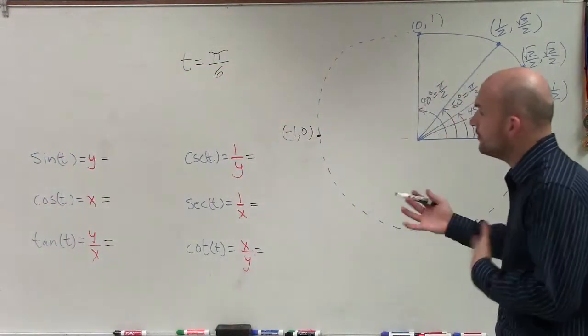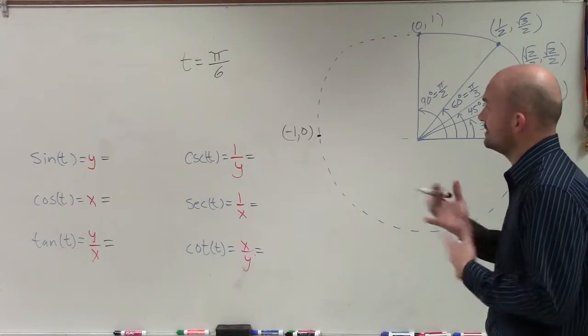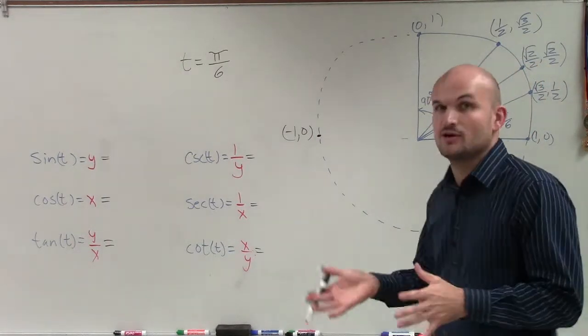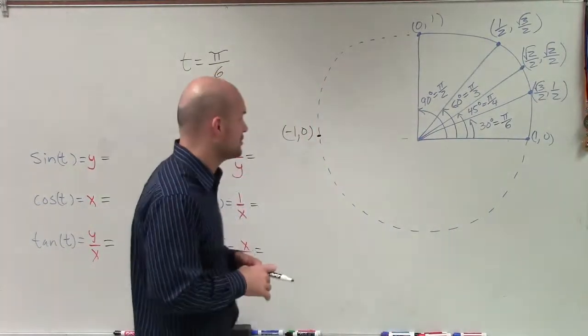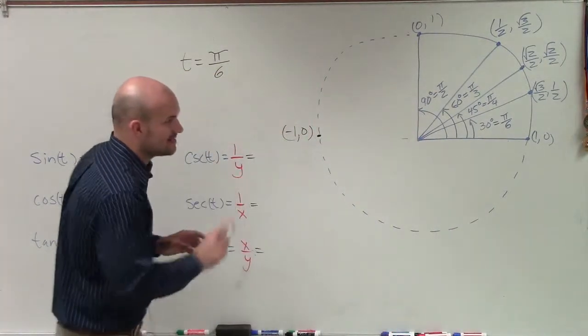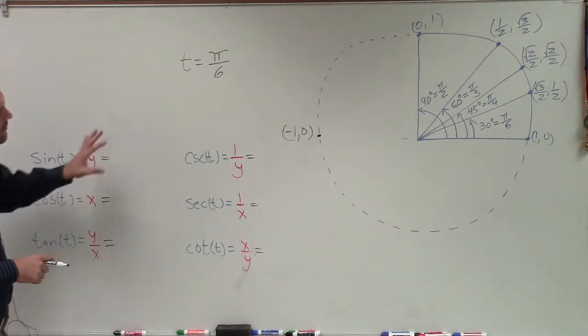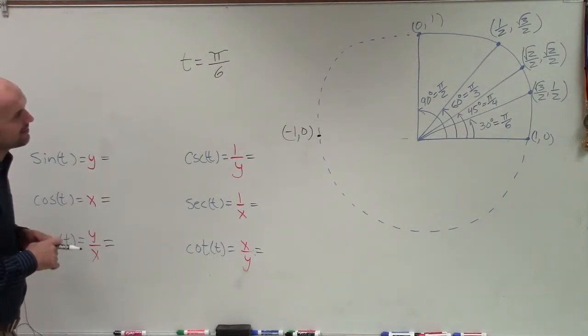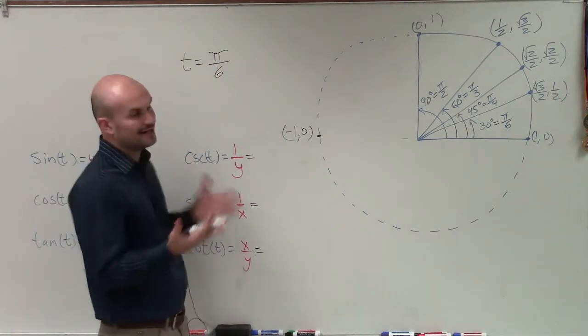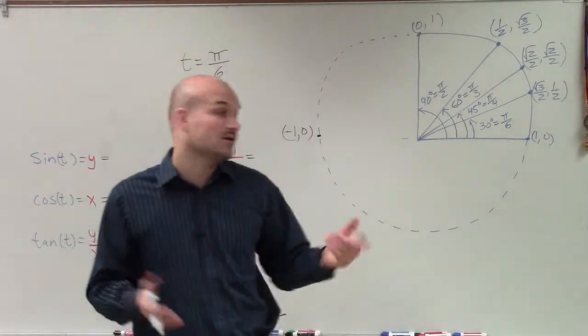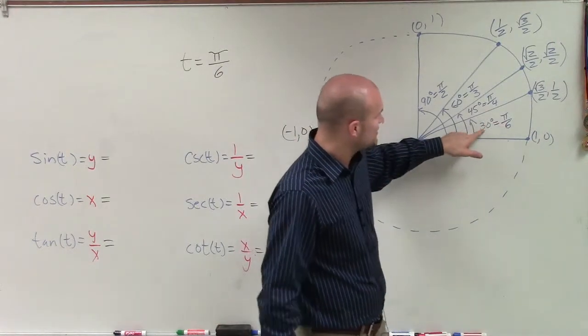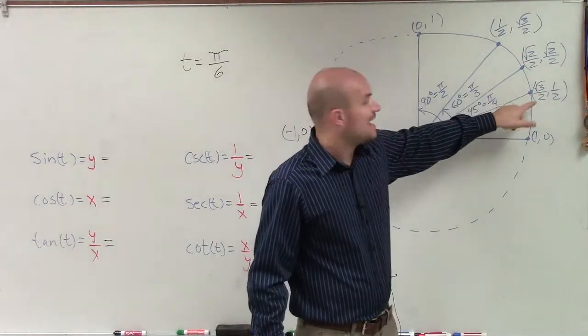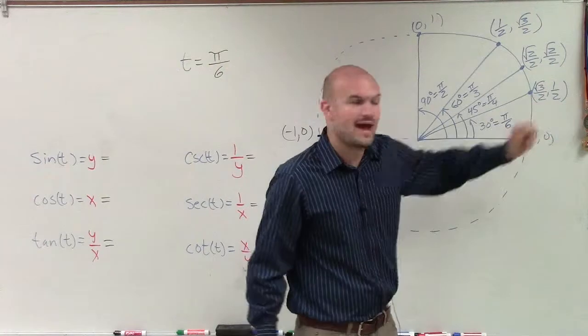So when I'm going over a point like this, t equals π over 6, we need to represent where is that angle going to intersect on the unit circle. So if we take a look at this, we want to see where this angle is going to intersect the unit circle. Now, thankfully for us, this angle is in the first quadrant. So I can see that this angle, π over 6 or 30 degrees, intersects at square root of 3 over 2 comma 1 half.